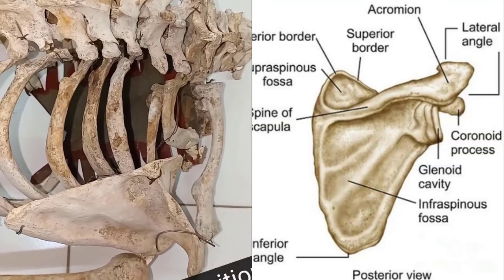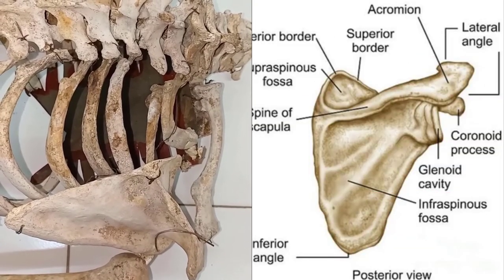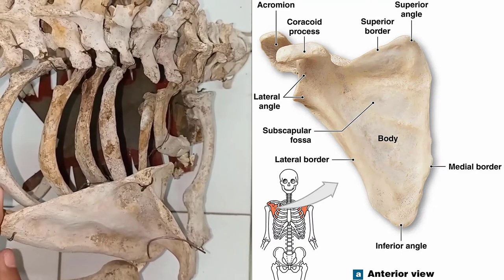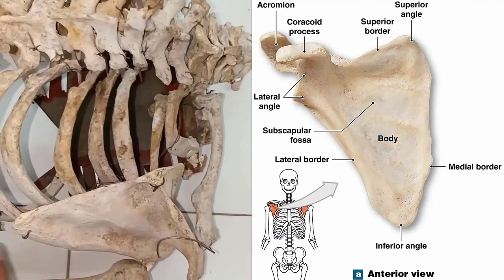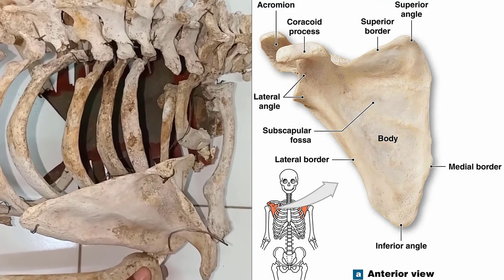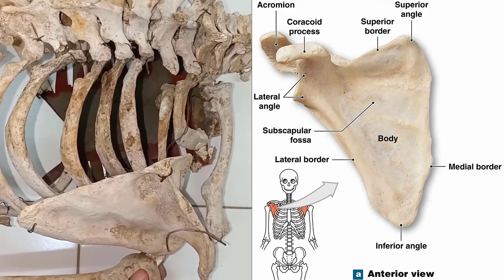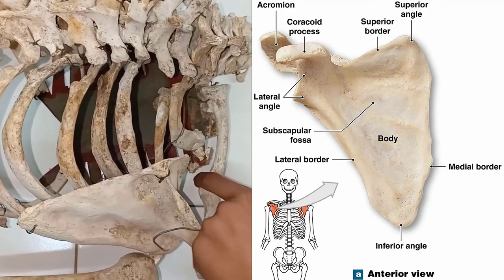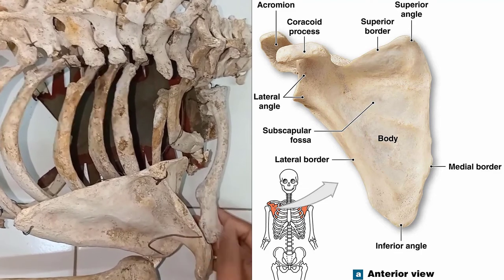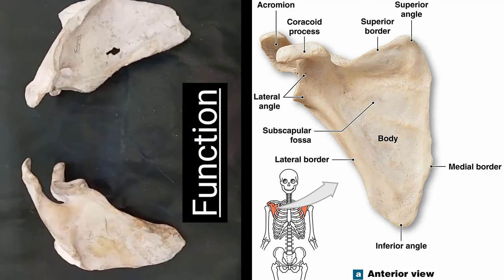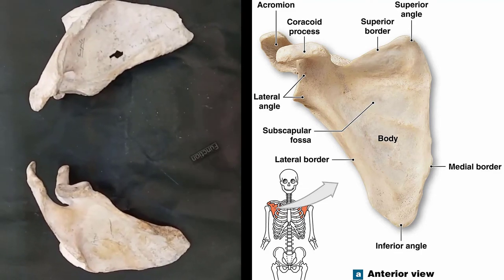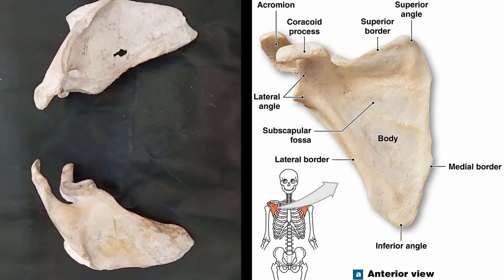This is the supraspinous fossa and this is the infraspinous fossa, and this is the neck region. The scapula is present on both sides of the shoulder and is located in the upper thoracic region on the posterior surface of the rib cage. It connects with the humerus at the glenohumeral joint, as well as with the clavicle at the acromioclavicular joint.